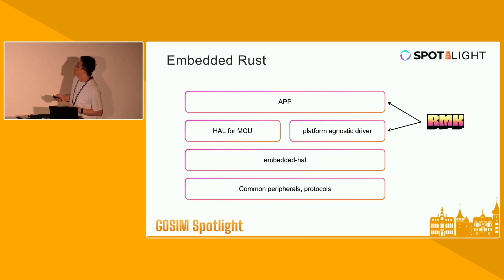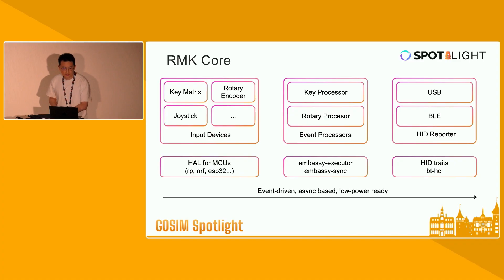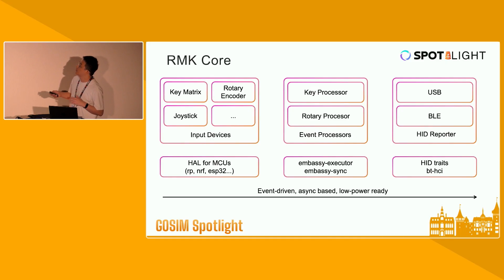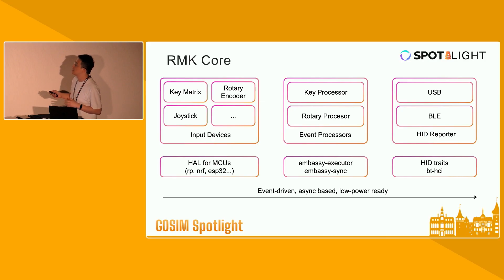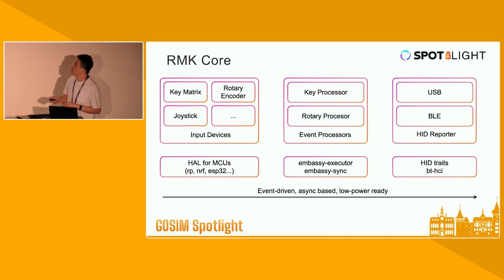In this diagram, RMK serves two roles. RMK core is the platform-agnostic driver, and RMK also provides a set of tools to help you build your keyboard application. RMK core has three main parts. The first is input devices, which include the key matrix, rotary encoder, and joysticks. These input devices are platform-agnostic drivers, meaning you can use them with any HAL that implements the embedded HAL traits. The input devices are responsible for reading user input and converting it to input events.